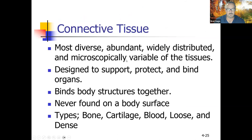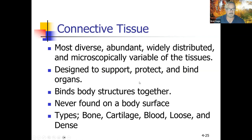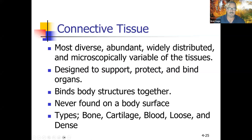Connective tissue is the most diverse, abundant, and widely distributed of the tissues. It's kind of a grab bag — cells that don't belong to muscle, nervous, or epithelial tissue. Connective tissue is designed to support, protect, and bind organs. It is never found on a body surface, with the exception of teeth, which are a form of connective tissue and are considered an exception to this rule.